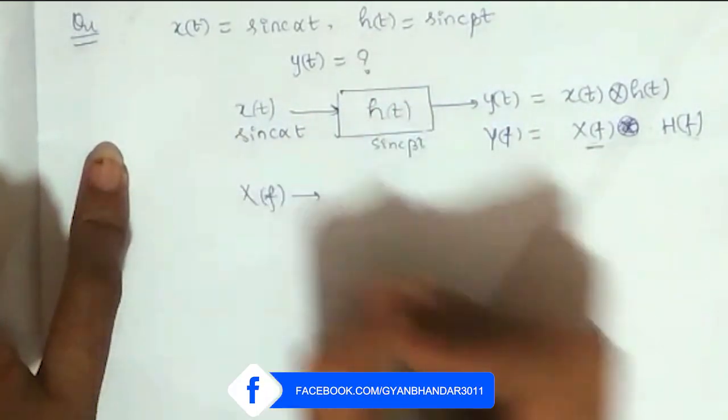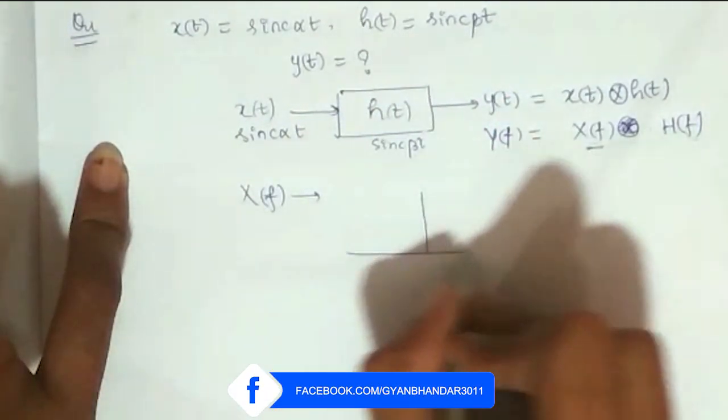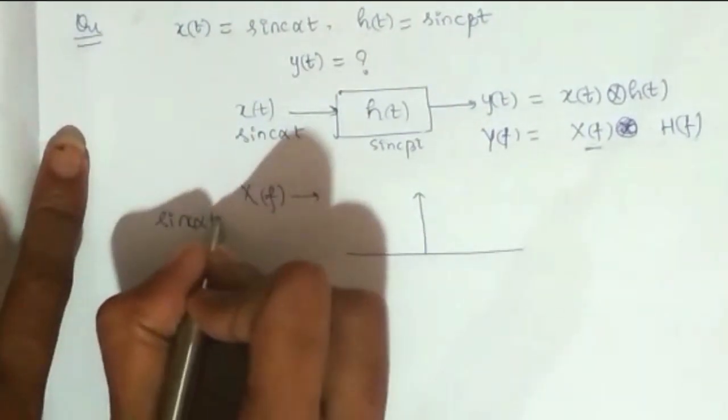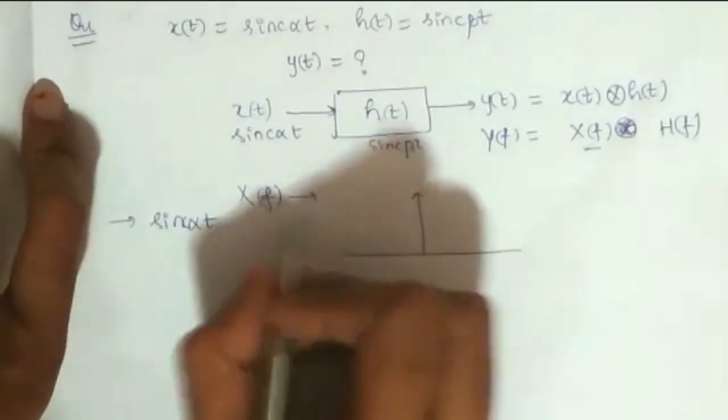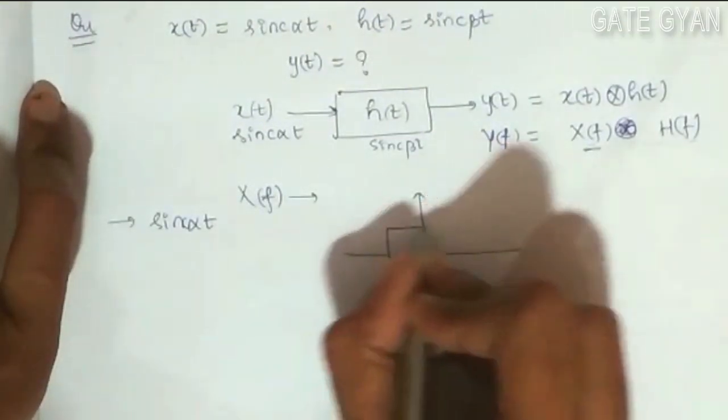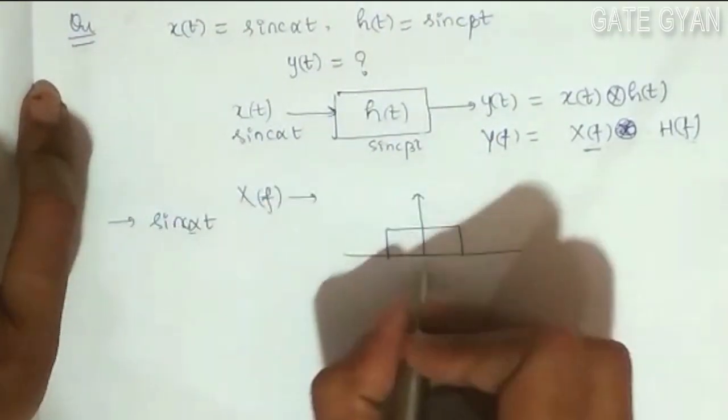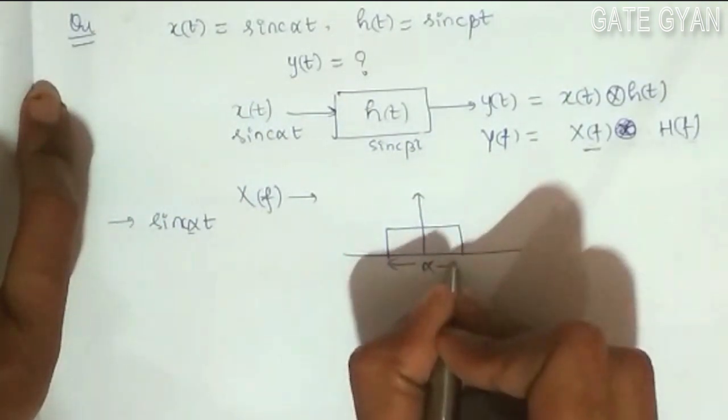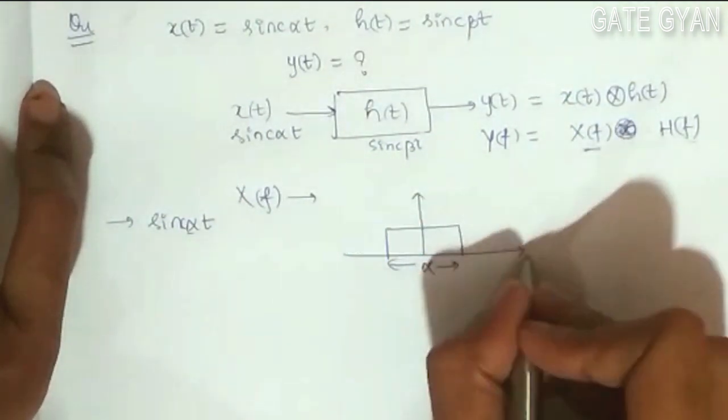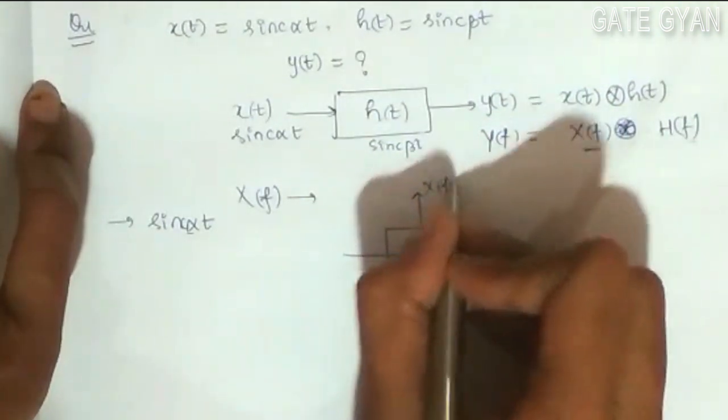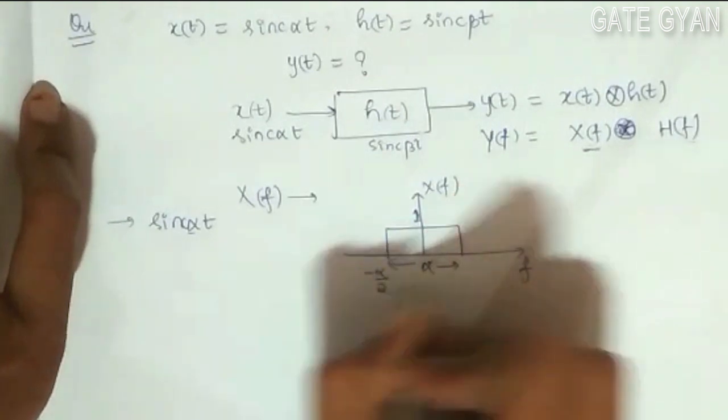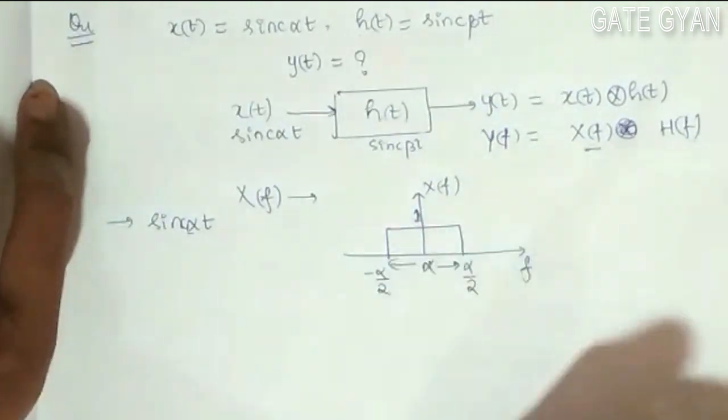So I am going to get the spectrum of this sinc function. So X(f) is going to be a rectangular pulse. This is my, for sinc(αt), my expectation is going to be this. This is going to be alpha. This is my f, X(f). Magnitude is going to be 1, so from minus alpha by 2 to alpha by 2.